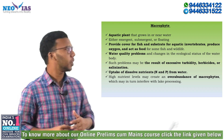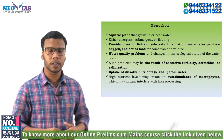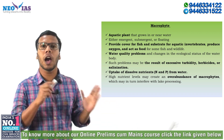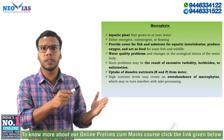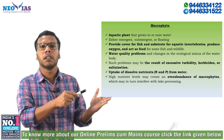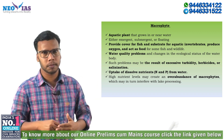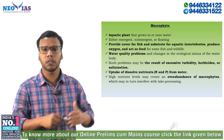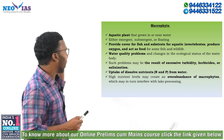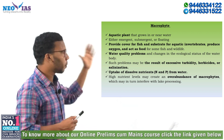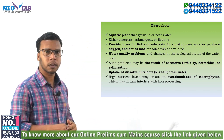Hi friends, today we have a topic: macrophytes. Macrophytes are simply the aquatic plants — the vegetation which is seen in or nearby the water is called macrophytes. So, macrophytes are aquatic plants that grow in or near the water.